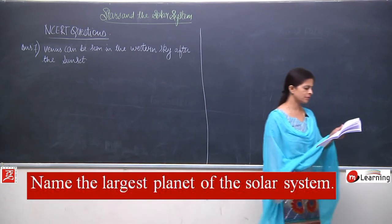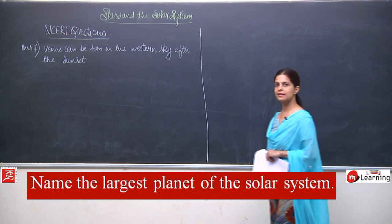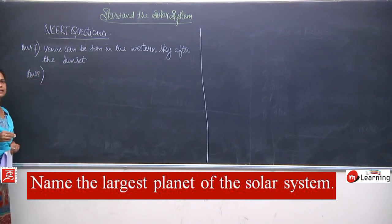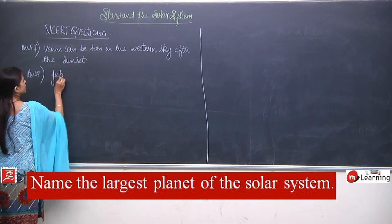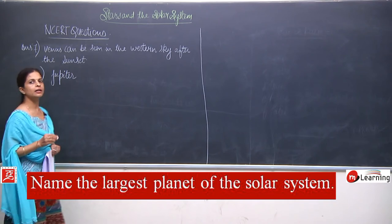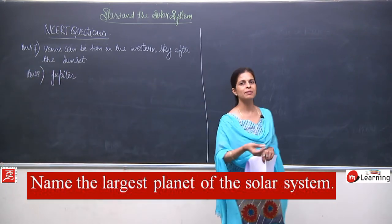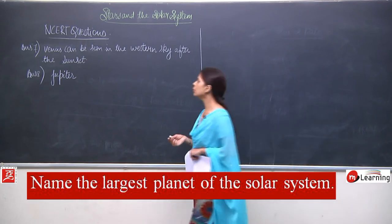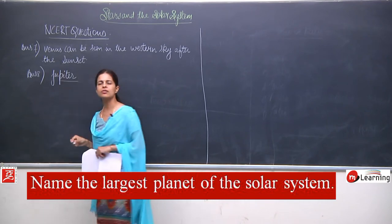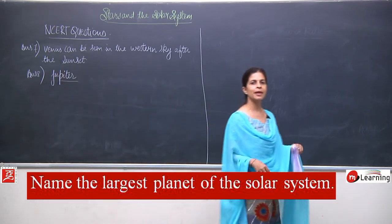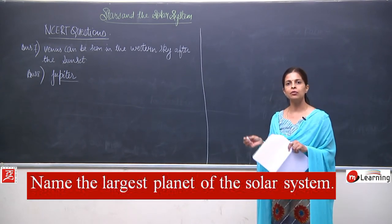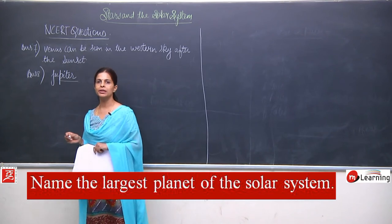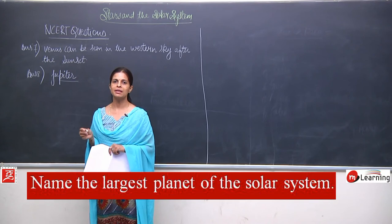Question number 8: name the largest planet of the solar system. Jupiter is the largest planet. In some books it says 1300 Earths can be accommodated in Jupiter, in others 13 — but around 1300 Earths can be accommodated in Jupiter. Just imagine the size — such a massive spherical body.